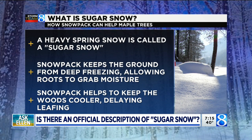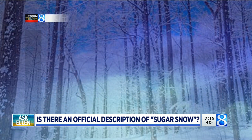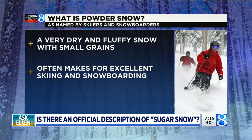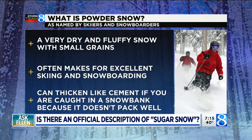Sugar snow actually has to do with sugar maples and sugar maple season, especially in the spring. It's a nice snowpack on the ground. So what I think Naomi is thinking of is powder snow. Sometimes powder snow can be called sugar snow by a winter weather recreationalist. But this is the dry fluffy stuff — super dry, often makes for excellent skiing and snowboarding.